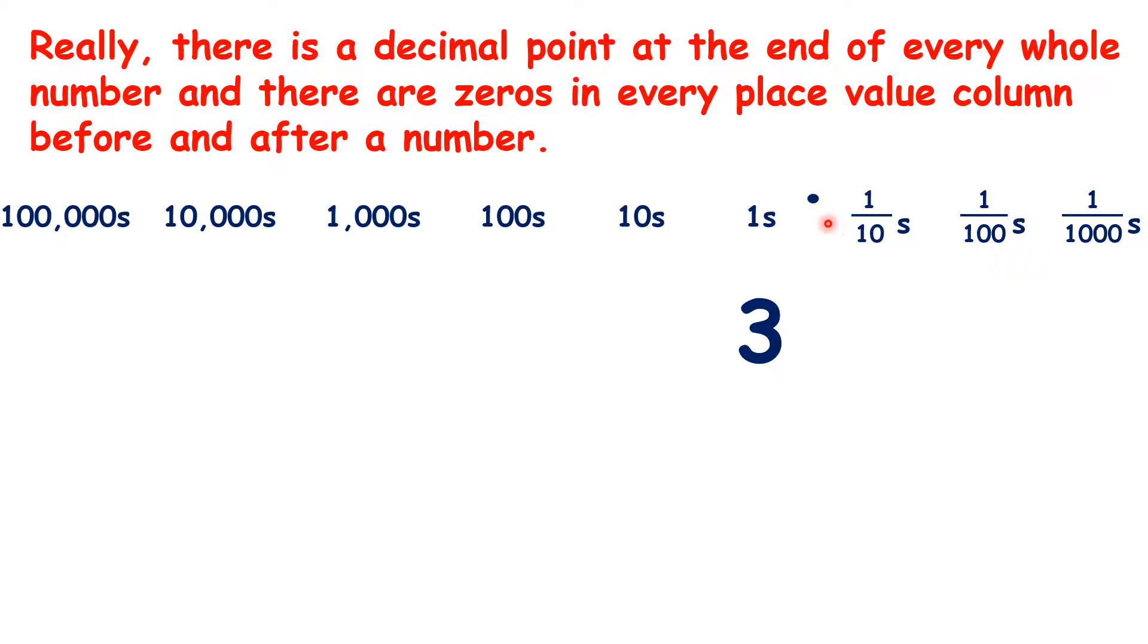So really, there is a decimal point after every number, and then if it's a whole number, there are zeros for all of the decimal place values. So the number 3.000 is just the number 3. Putting .000 on the end doesn't change the number.